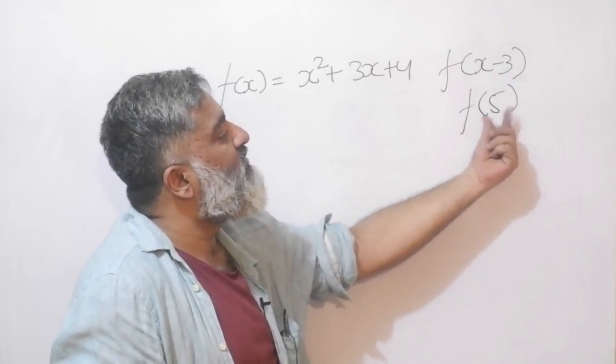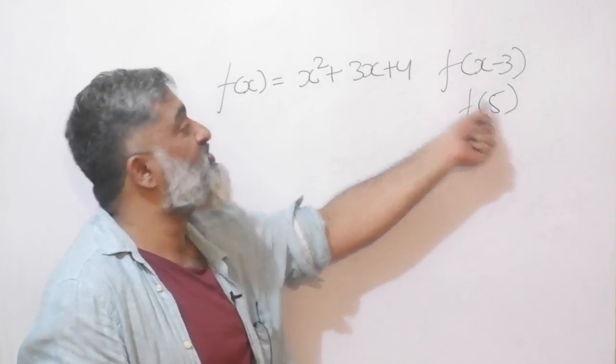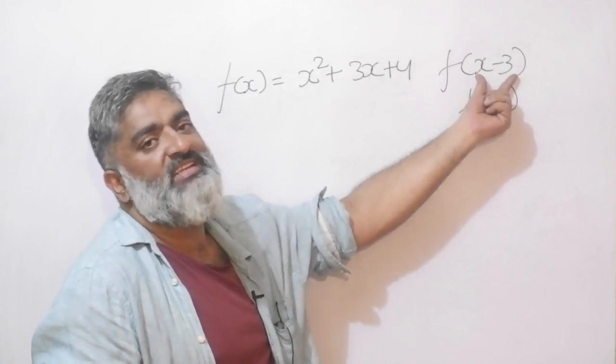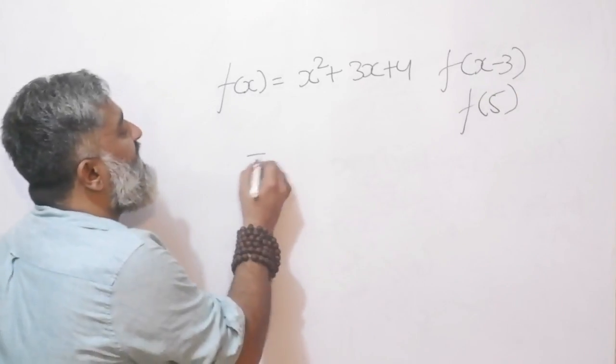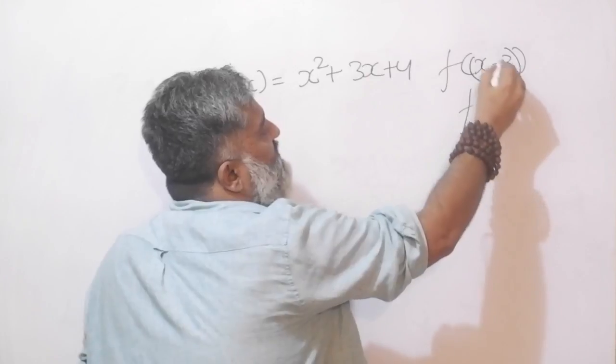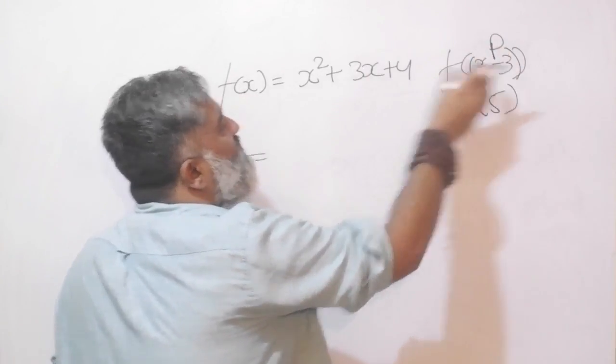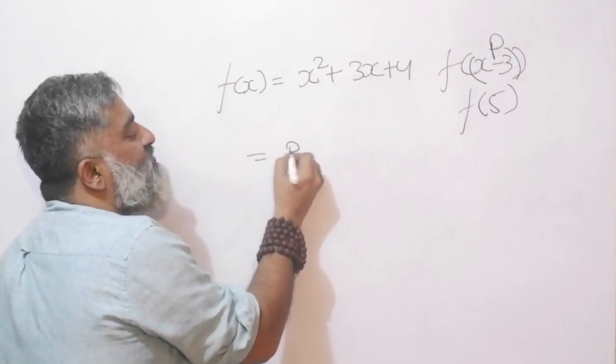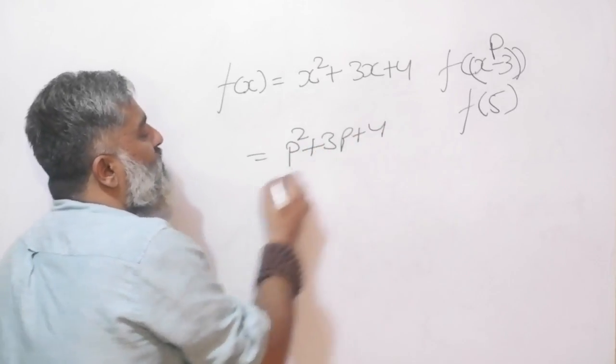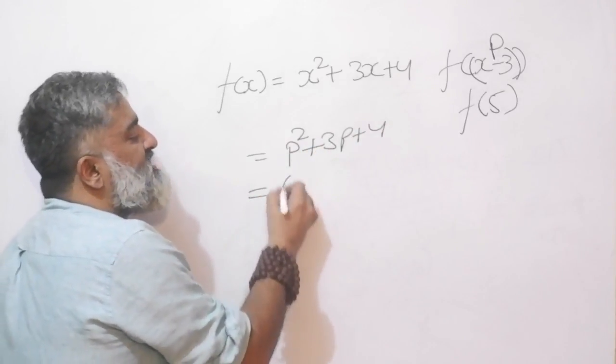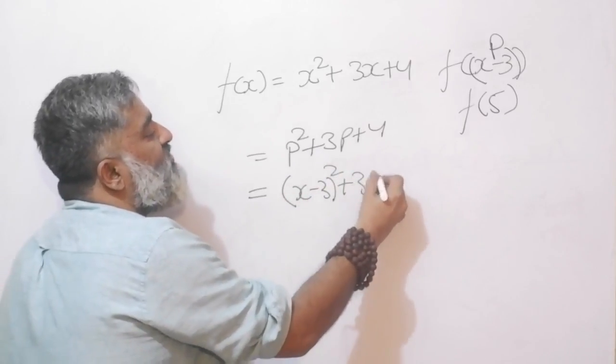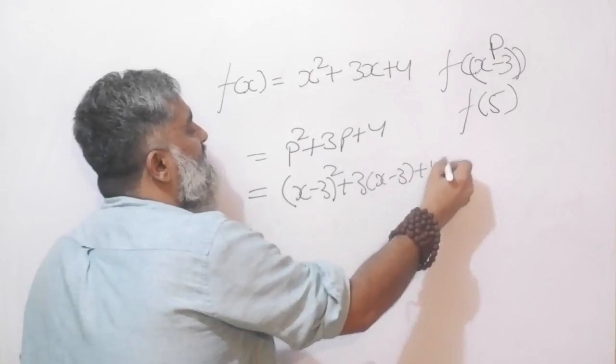Whatever was written inside the bracket should be put in place of x. This time inside the bracket there is x minus 3. Wherever there is x, or if you want to elongate the process, call it p for a second. Wherever there is x I can put p. This will become p square plus 3p plus 4. But now you know what p is. Instead of p, rewrite x minus 3 square, 3 into x minus 3 plus 4.